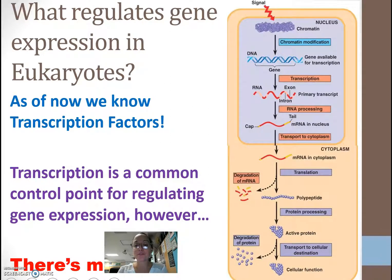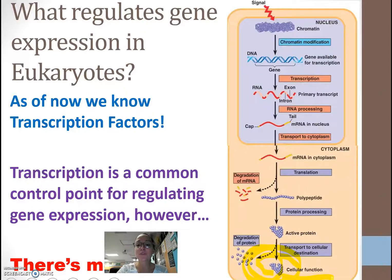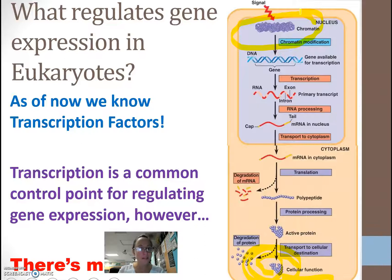When we talk about regulating gene expression, ultimately what we're regulating is the final protein product — what proteins are being made, because that's what leads to cellular function. We can block or allow transcription, but there are lots of other places we can influence whether a protein is made. One of the first things we can look at is chromatin — your DNA and proteins inside your nucleus — which we can modify to either allow genes to be expressed or not.